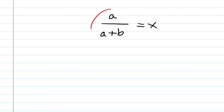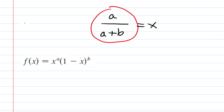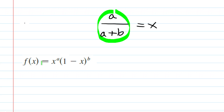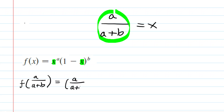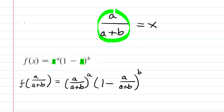We're not yet done with step one, because step one requires us to evaluate the function at that critical number. So we're going to plug x equals a over (a plus b) into the original function. This gives us f of a over (a plus b) equals a divided by quantity a plus b, all raised to the power of a, times 1 minus a over (a plus b), all raised to the power of b.